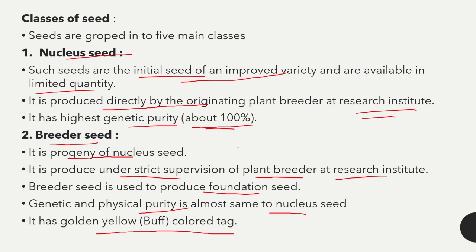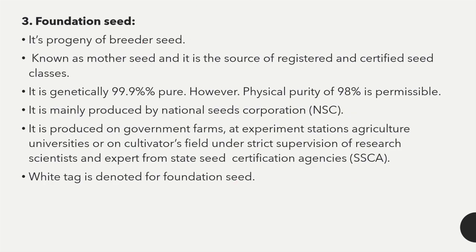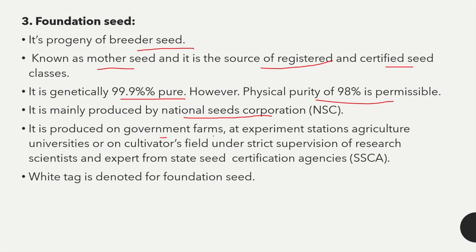Third is foundation seed — a progeny of breeder seed, known as mother seed as it is a source of registered and certified seed classes. It is genetically 99.9 percent pure and physically 98 percent pure. It is mainly produced by the National Seed Corporation (NSC), produced on government farms or at experiment stations under strict supervision of research scientists. The foundation seed color tag is white.